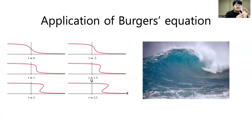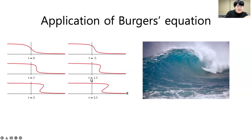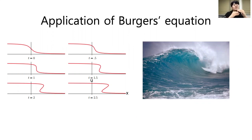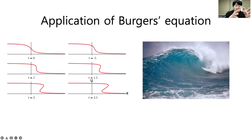One application of inviscid Burgers' equation is this waveform. As you can see in the left picture, the solution of Burgers' equation is shown where the x-axis is a space term and the y-axis is a velocity term. As time flows, it shows a kind of distribution and at some region a single x value has two velocity vectors — which is really similar to wave motion. This is one example of the application of Burgers' equation.